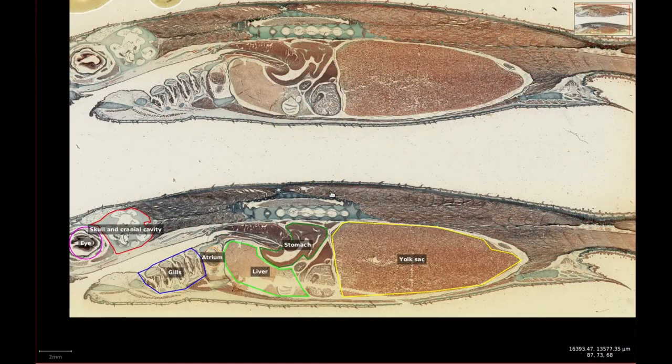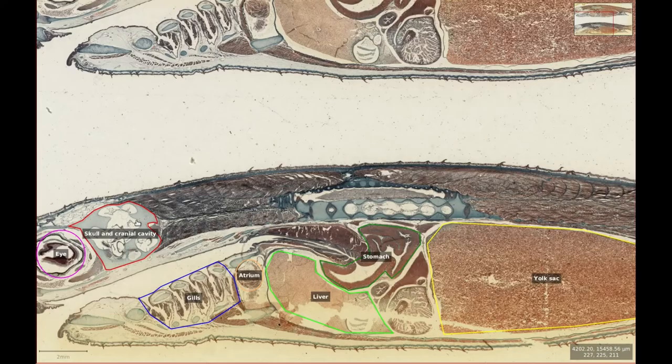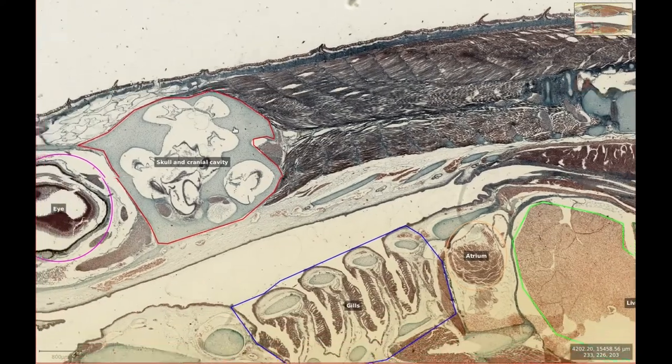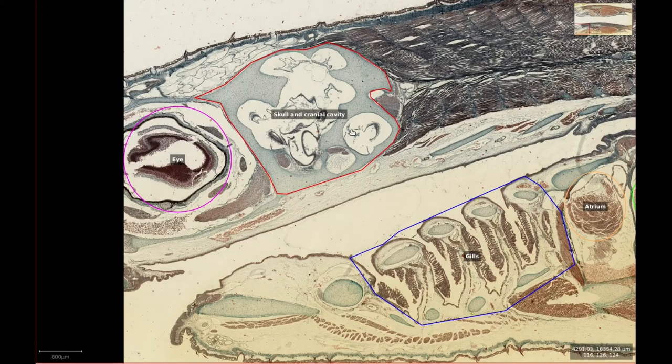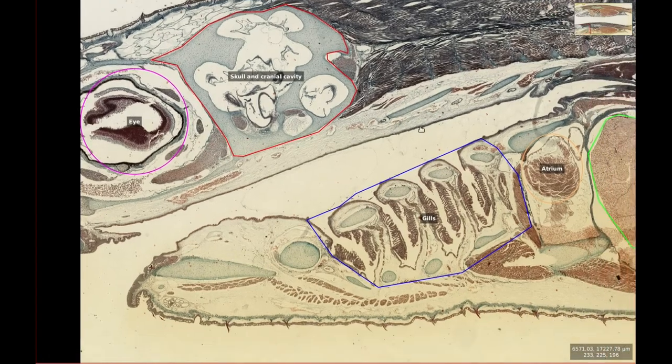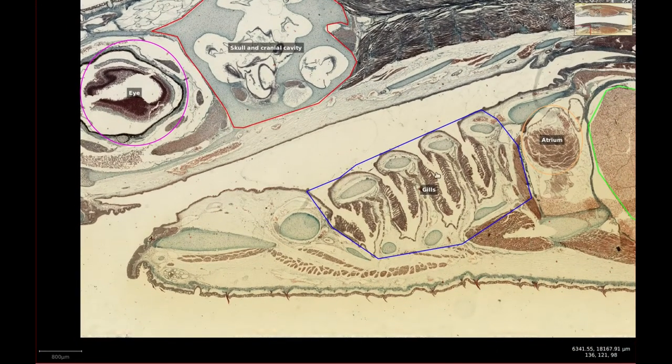Next on our journey from medial to lateral, we have slide 244. There's no brain on this section, but we finally have a slice through the eye, behind which we have some of the skull made up of cartilage enclosing some cavities. Ventral to that, and below the oral cavity, we have a larger section of gills where we can begin to make out the circular cartilage forming the five gill arches.